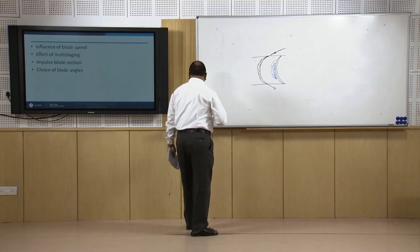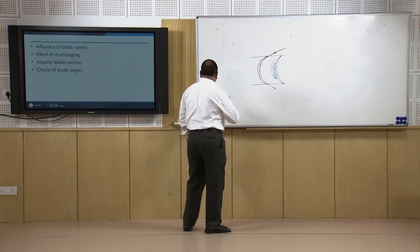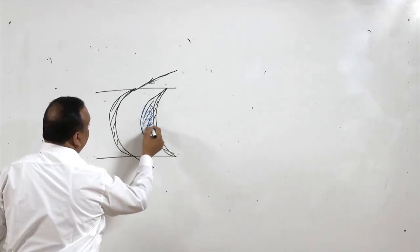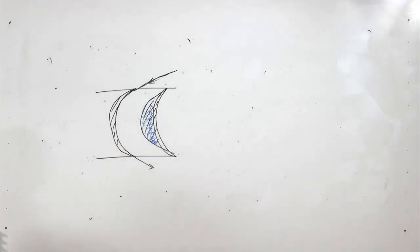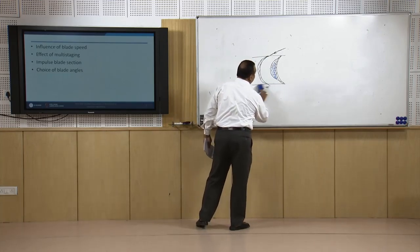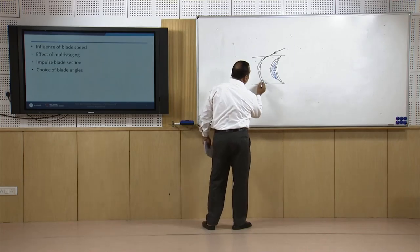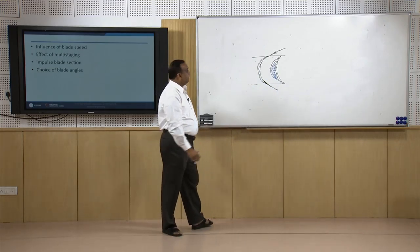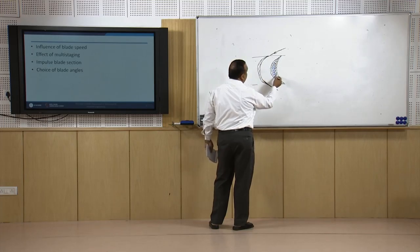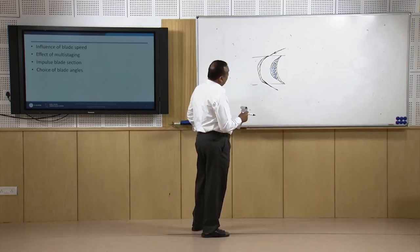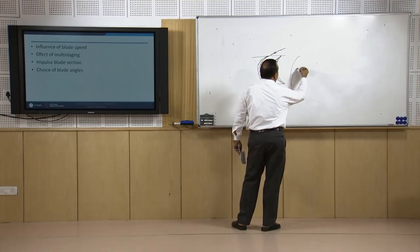To overcome this, profile-type blades were introduced. The suction side was extended to eliminate turbulence near the convex surface and improve blade performance. In some cases the exit side was also extended to give proper direction to the outgoing steam. This profiling of impulse turbine blades significantly improved turbine performance. In reaction turbines, airfoil-type blades are used, which will be discussed in detail when we cover reaction turbines.